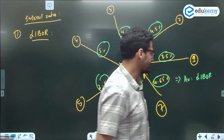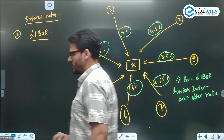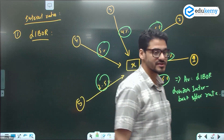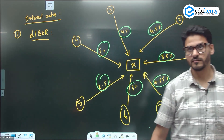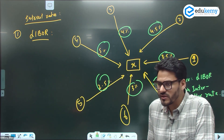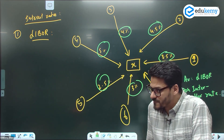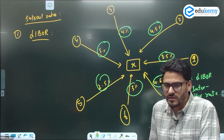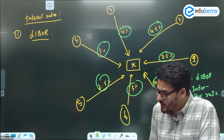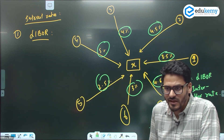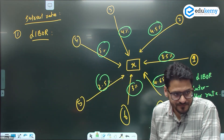London Interbank Offer Rate, known as LIBOR, is a very important interest rate in the world. It represents the average offer rate for interbank loans in London. This rate applies to short-term loans, because the banks are giving loans to other banks for the short term at the London Interbank Offer Rate.